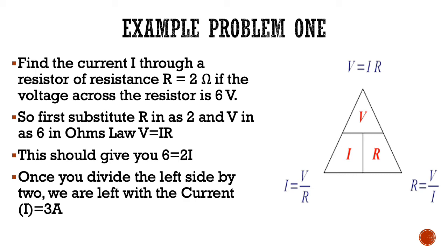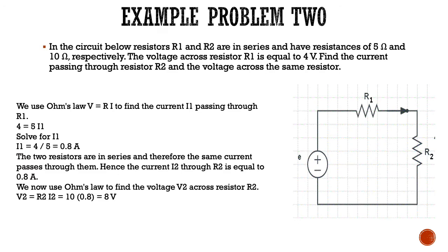On example problem two, we're stepping it up a little bit. We're going to have two resistors here. In the circuit below, resistors R1 and R2 are in series and have resistances of 5 ohms and 10 ohms respectively. The voltage across resistor R1 equals 4 volts. Find the current passing through resistor 2 and the voltage across the same resistor. On the right you can see our circuit with two resistors.